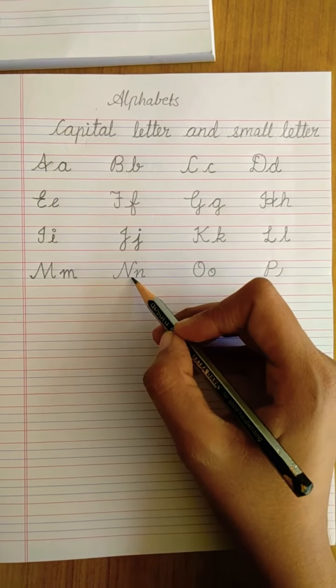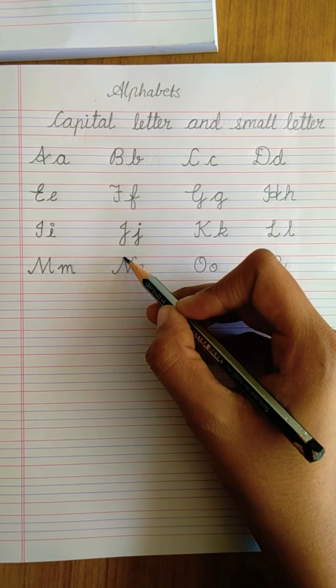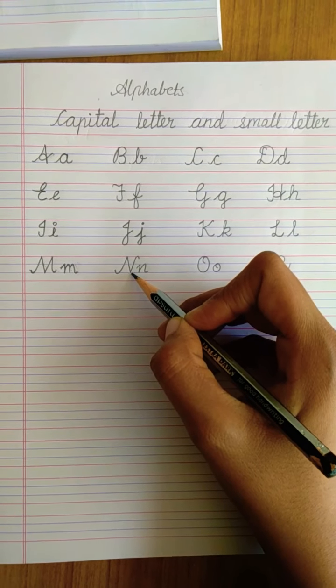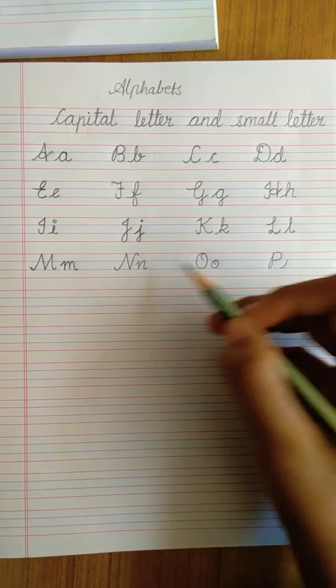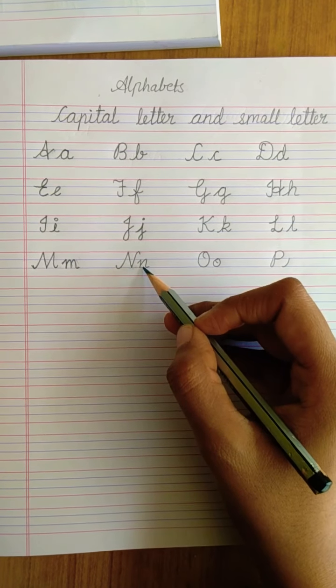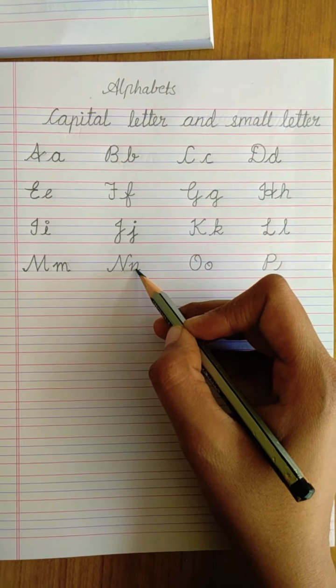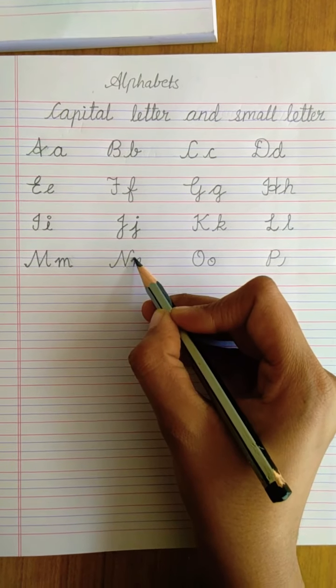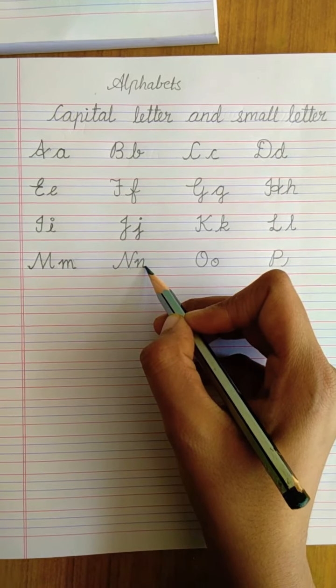We will be writing letter N. Take a slight curve, go up, touch to the red line, come back again to second blue line, then go and it's done. N. In the same way, small letter N you will be writing between two blue lines. Cross line, come down, go up, take a round and a slight curve down.